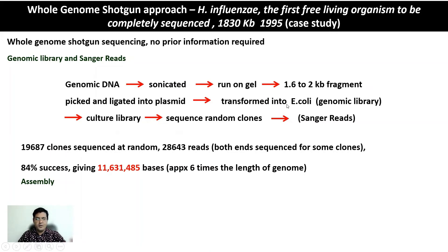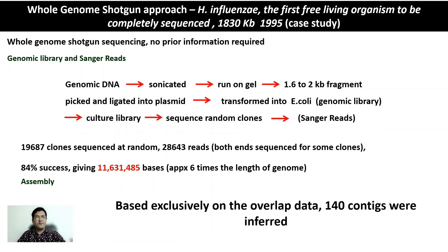After obtaining the Sanger reads, they were assembled based exclusively on overlap data, and 140 contigs were inferred. With 140 contigs, the minimum number of internal gaps is 139. The question was: of these 139 gaps, how many are sequencing gaps — which can be closed by sequencing the concerned fragment — versus how many are physical gaps, where the fragment representing that part of the genome was simply not present in the library at all?